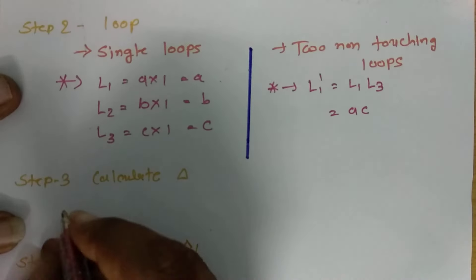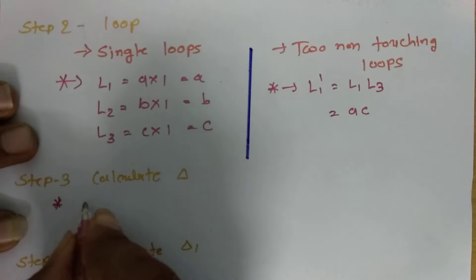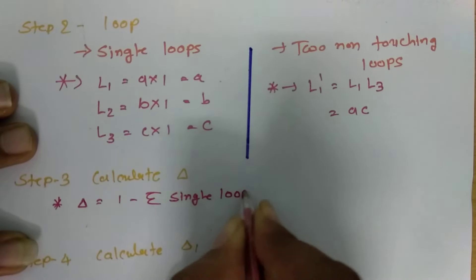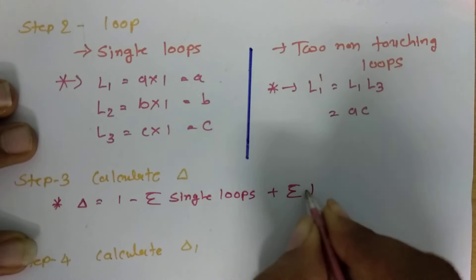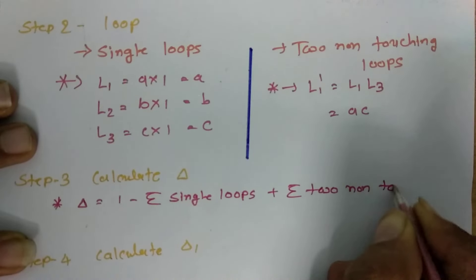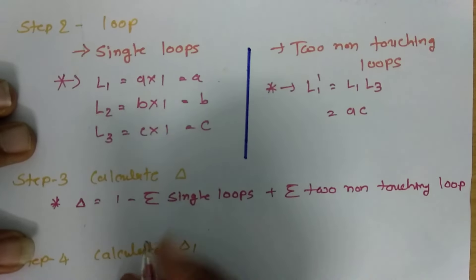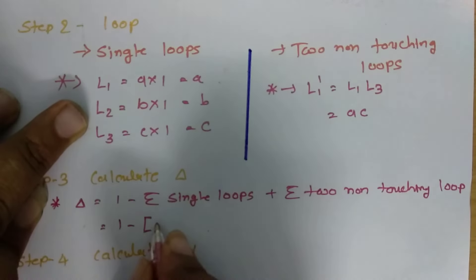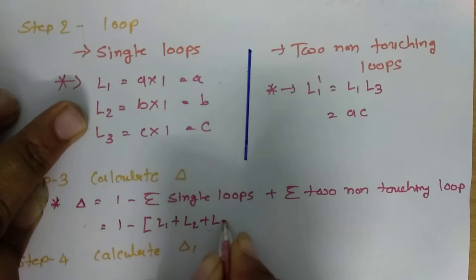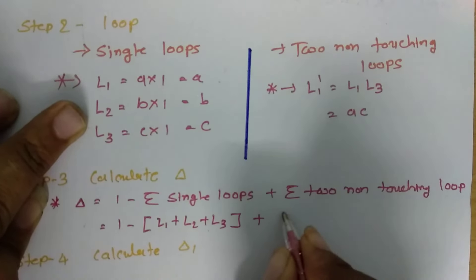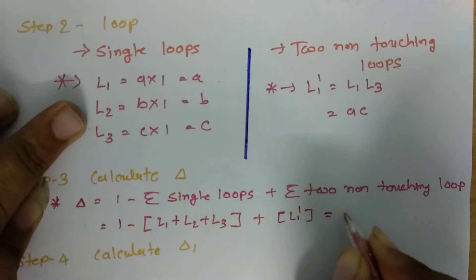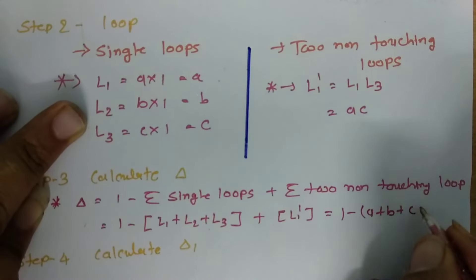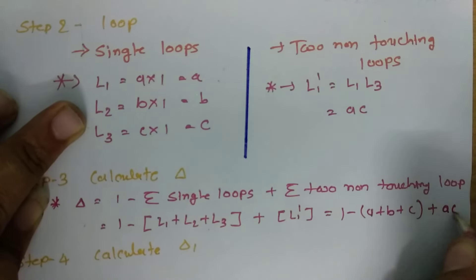Now we will solve for delta. Delta equals 1 minus the summation of single loops plus the summation of two non-touching loops. So delta = 1 − (L1 + L2 + L3) + L1' = 1 − (A + B + C) + AC.